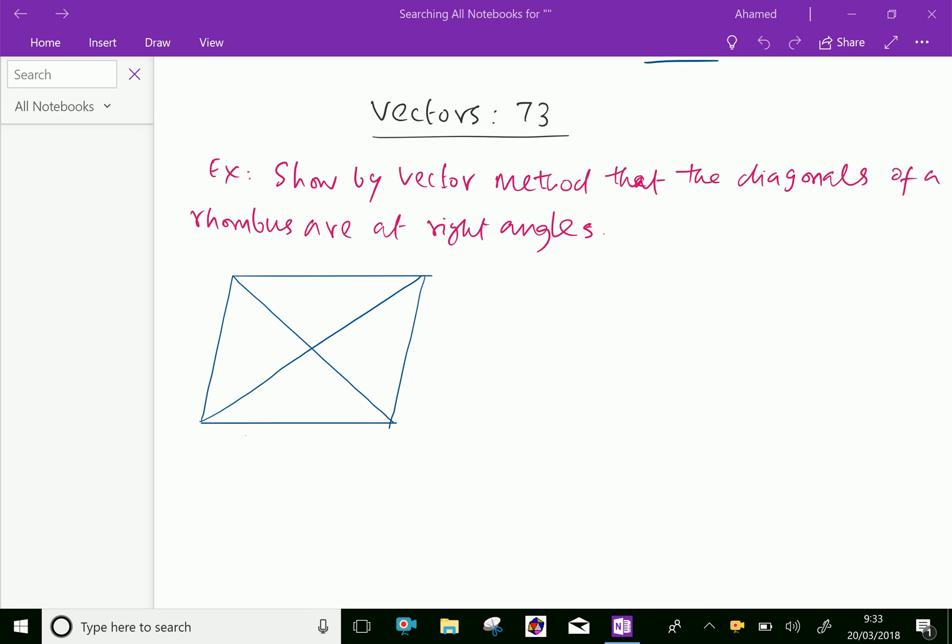Welcome to AminAcademy.com. In vectors, let us do an example problem regarding proving by vector method that the diagonals of a rhombus are at right angles.